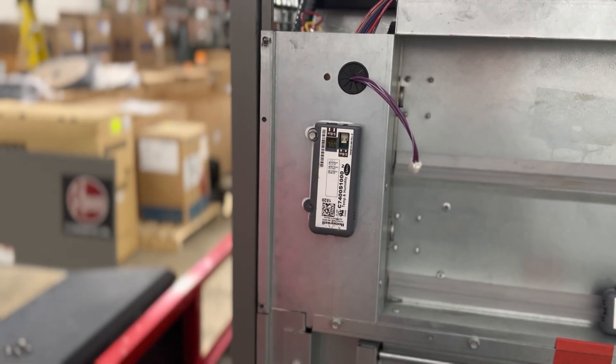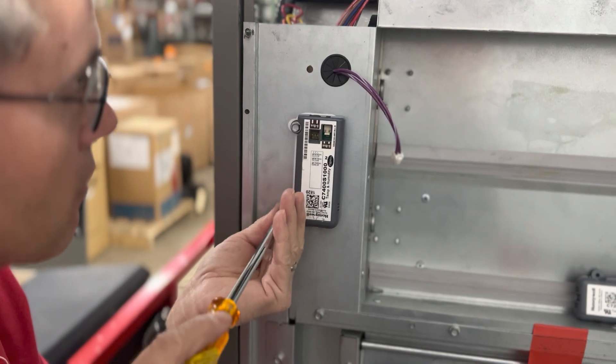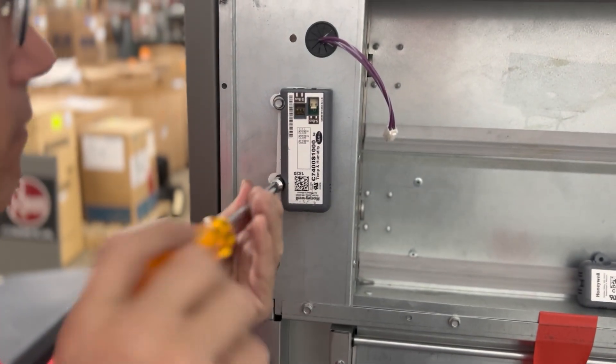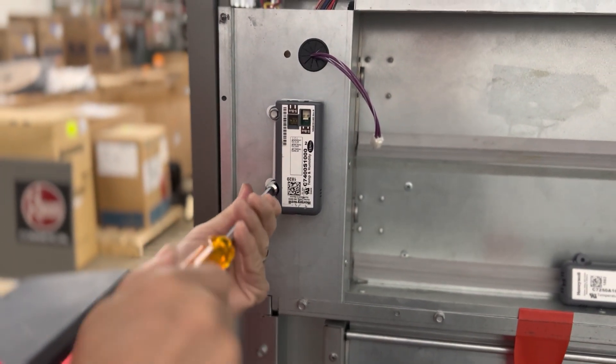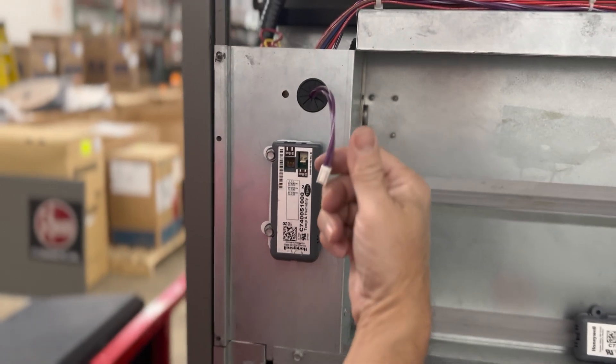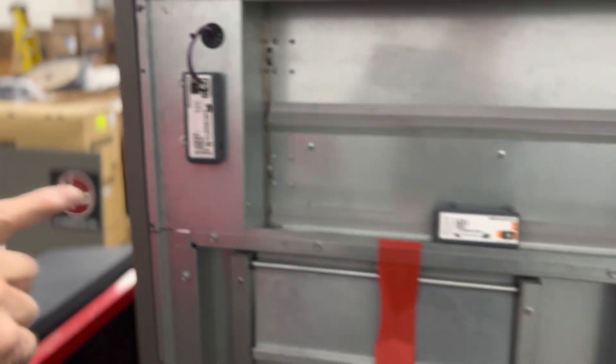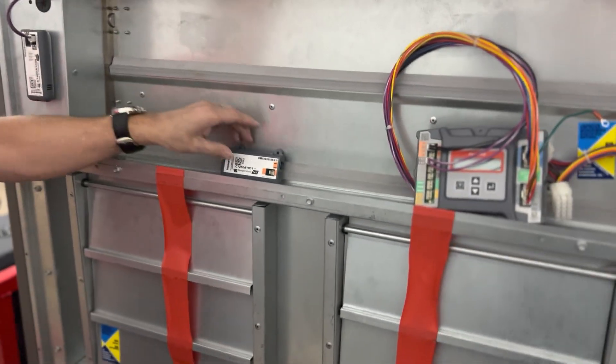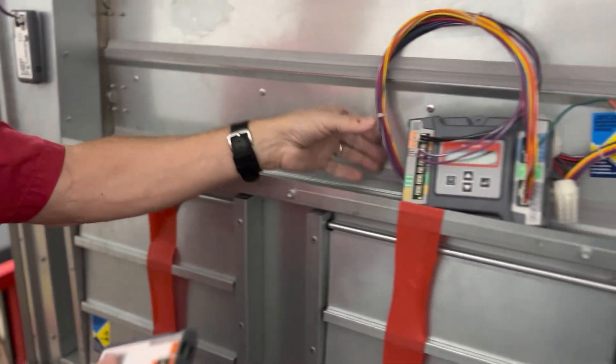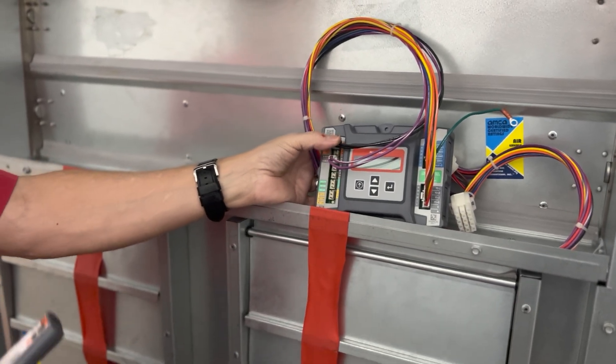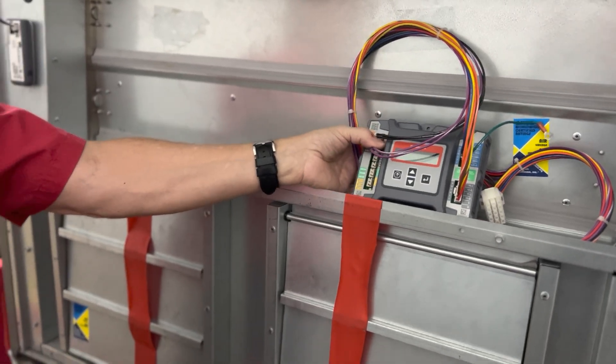And we'll just screw this loosely for the moment. That'll mount right there. There are two purple wires here, and these will connect to the enthalpy sensor. Now we're going to take our other two parts, our mixed air sensor and our main controller, and we're going to go to the next two steps. So this was basically step one of three.